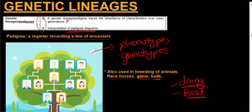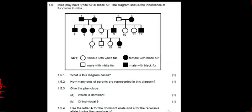Let's look at some questions from previous exam papers. Mice may have white fur or black fur. The diagram shows the inheritance of fur color in mice. A female that is a clear white circle will have white fur, a male with white fur will be represented with a clear white square, a female with black fur will be represented by a dark circle, and a male with a dark square.